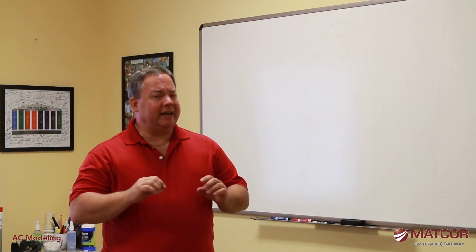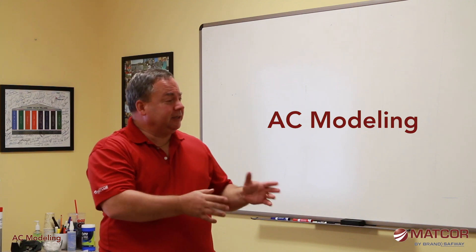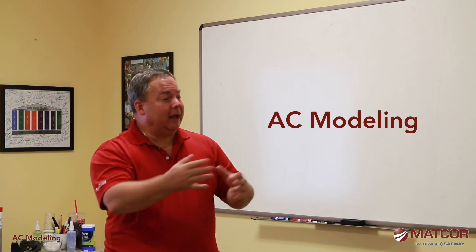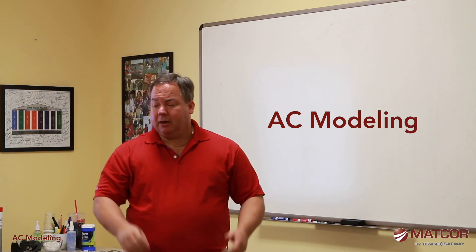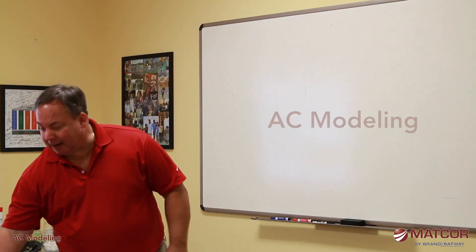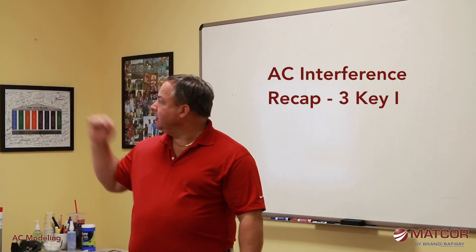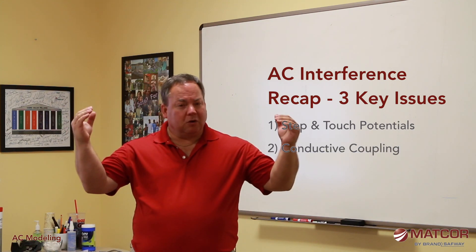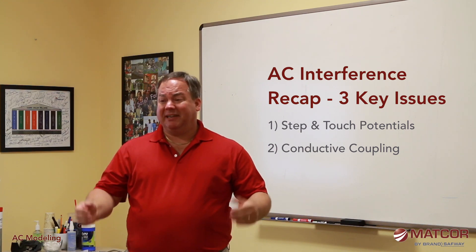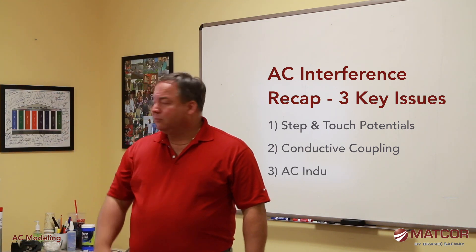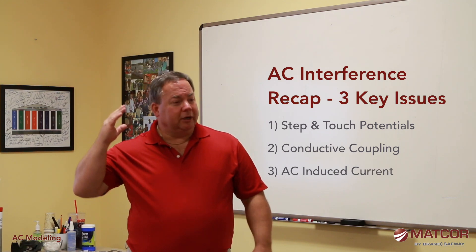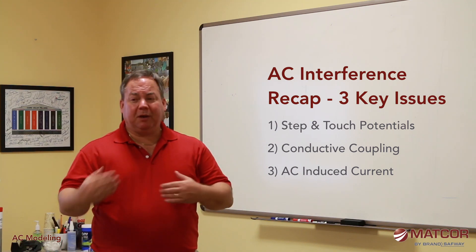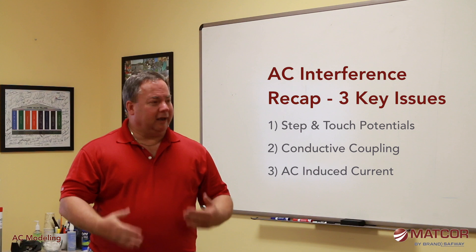In this segment we're going to talk about AC modeling. As a recap, there are three different issues: step and touch potentials, where we want to be below 15 volts AC; conductive couplings, where a fault condition dumps current into the earth and we want to make sure the pipeline is not damaged; and induced voltage, where the pipeline picks up voltage and current because it runs parallel to the transmission line.